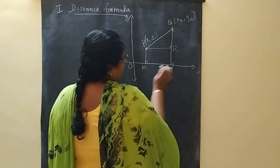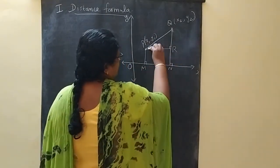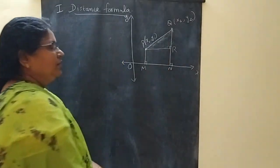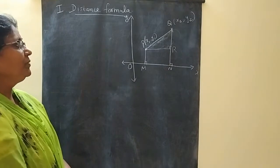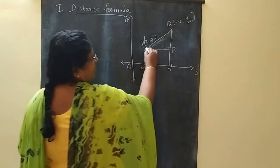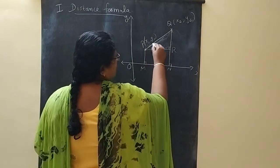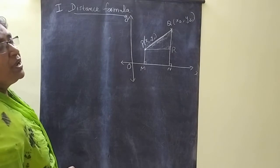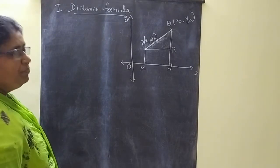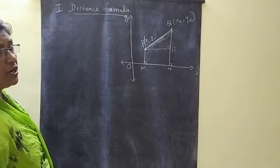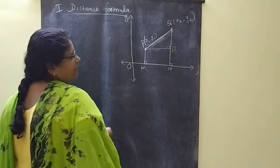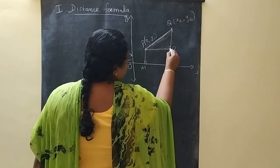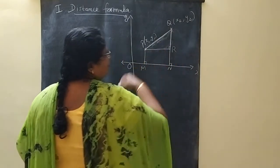Now, while doing these constructions, we get a right-angled triangle. In this right-angled triangle, PQ is the hypotenuse. So we can apply the Pythagoras theorem: PQ² = PR² + QR².